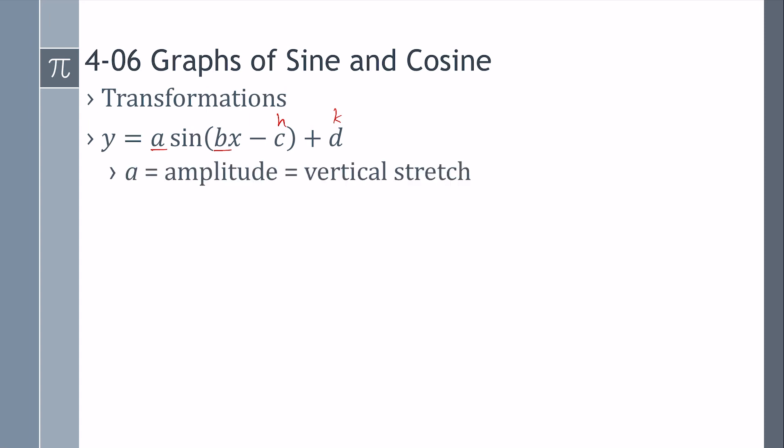A is the amplitude, which is also the vertical stretch. B is our horizontal shrink, so that will actually change the period. The period for sine and cosine is two pi divided by B.